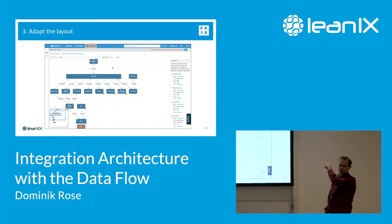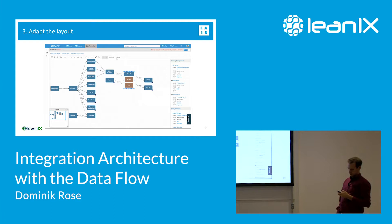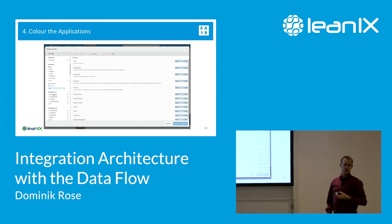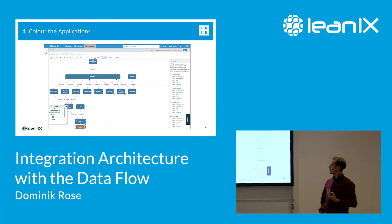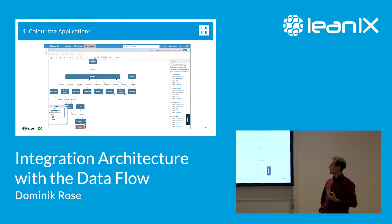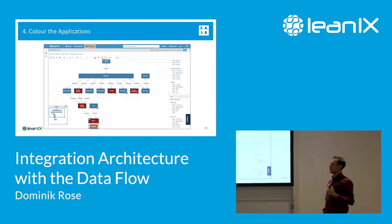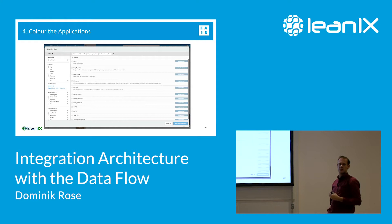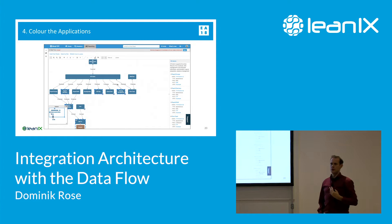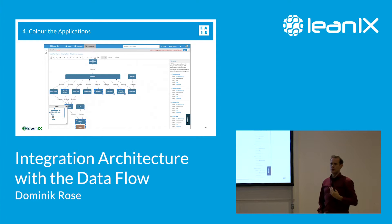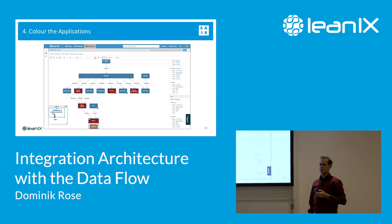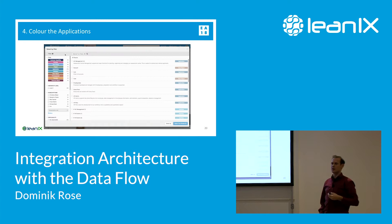You can switch back to vertical flow to make it look better, and in the end save it and share the report. You can color applications even today. We announced in the keynote yesterday that we will improve this — like in the application landscape you'll be able to use tags to color things. But today you have a 'select by filter' function on the top left, where you select some applications and paint them red or green interactively.